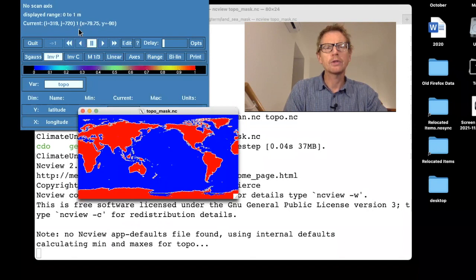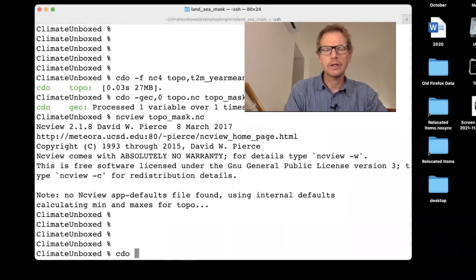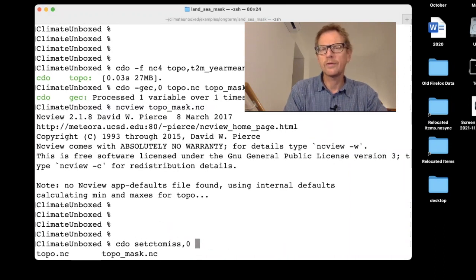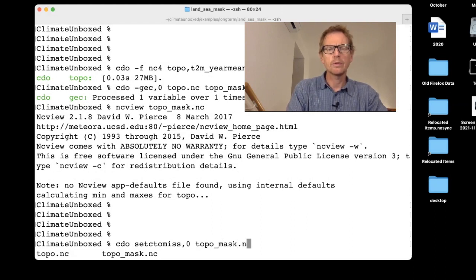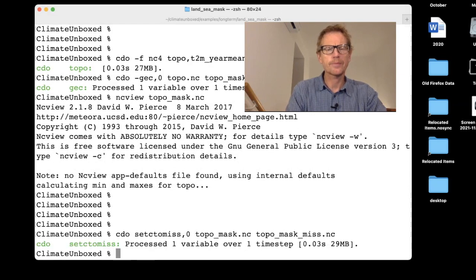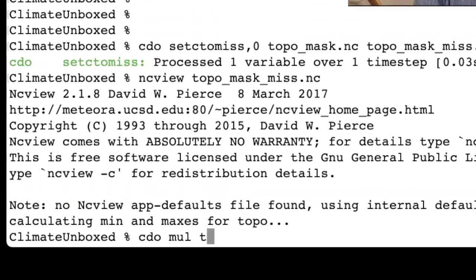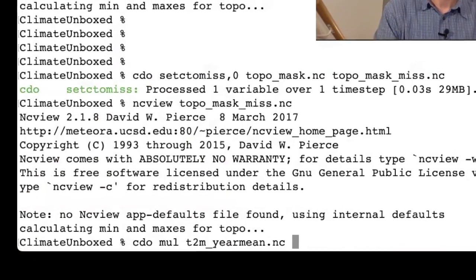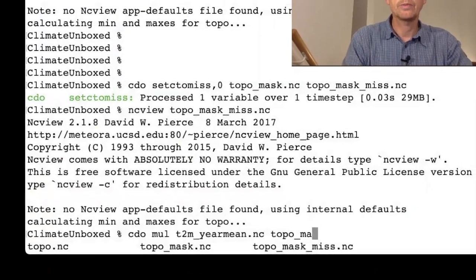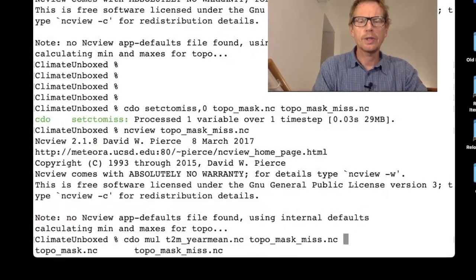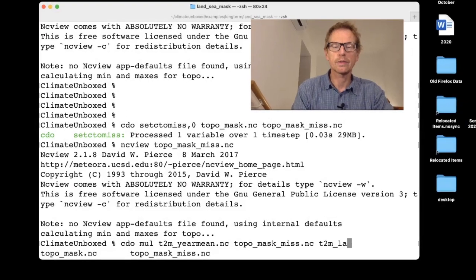If we look at this now, we have topo mask.nc. Now we have a file which is red over the land and it's blue over the ocean. And if we look at where the cursor value is read out here, we can see that we have zeros over ocean and one over land. Step three was to then turn the zeros into missing. So we say setCtomiss comma zero. So this sets all of these zeros over the ocean to missing values. So we have topo mask. And then we say topo mask miss dot NC. So now when we open this latest file, we now have one over all the land points. And we have the missing fill value here over the ocean points, which are now colored white. So now all we need to do is take the product of the data file. So we have the year mean. And now we have the topo mask underscore miss. And I'm going to call it T2M masked dot NC, or we can call it land dot NC.